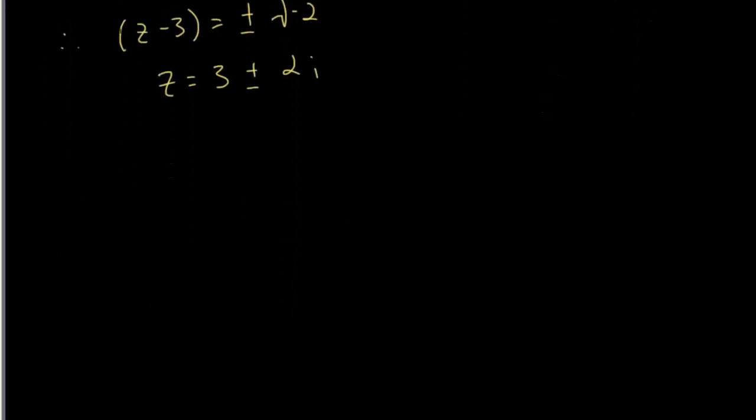So therefore we can say that z is equals to 3 plus or minus 2i. Now this is what I talked about last lecture, the conjugate pair. This is my conjugate pair. So z1 is equals to 3 plus 2i. That's my first root. My second root will be 3 minus 2i.